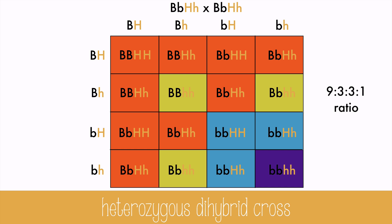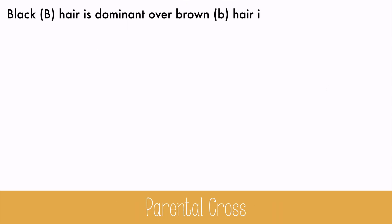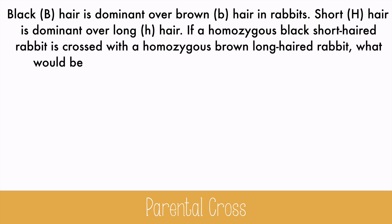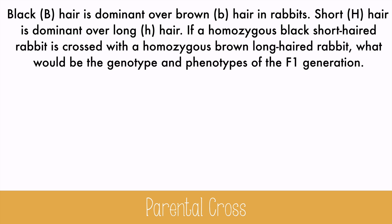But not every cross will be this big or have such a complicated ratio. Let's try a problem. Black hair is dominant over brown hair in rabbits. Short hair is dominant over long hair. If a homozygous black short-haired rabbit is crossed with a homozygous brown long-haired rabbit, what would be the genotype and phenotypes of the F1 generation? One rabbit is homozygous black and short-haired, so that's going to be two big B's and two big H's. The other rabbit is homozygous brown long-haired, so that's two little b's and two little h's.